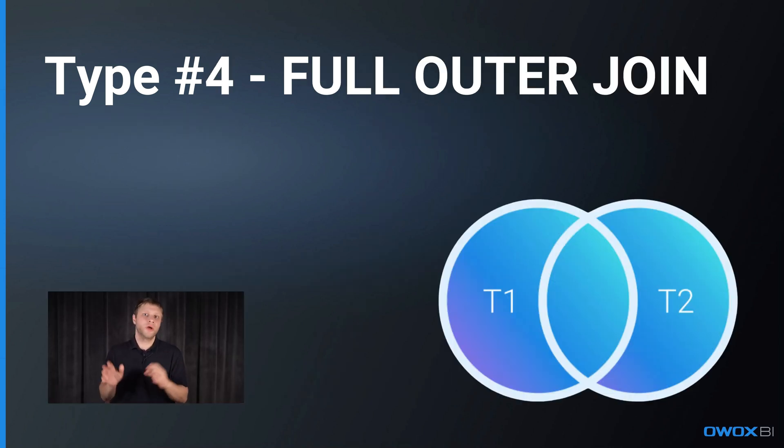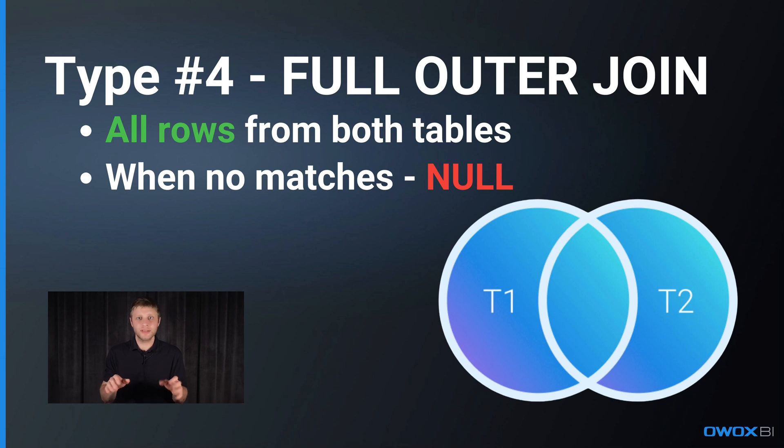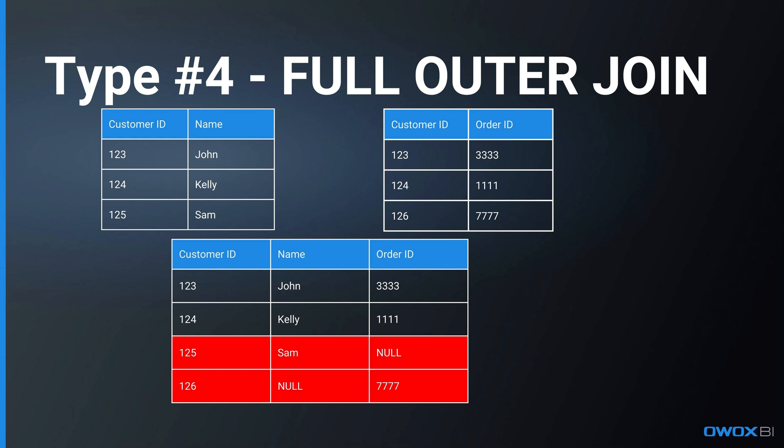Next, the Full Outer Join — or sometimes called just Full Join. This is the most comprehensive data combination, pulling all rows from both tables. When no matches exist, it fills with null values. This type of join is used when you need to ensure no data is left behind, showing all the gaps directly. As you can see, we'll have both Sam who hadn't made any purchases, as well as the customer with ID 126 who doesn't have any information in our database. Each of these join types serves distinct purposes, allowing analysts to tailor their data retrieval for accuracy, precision, and in-depth reporting.